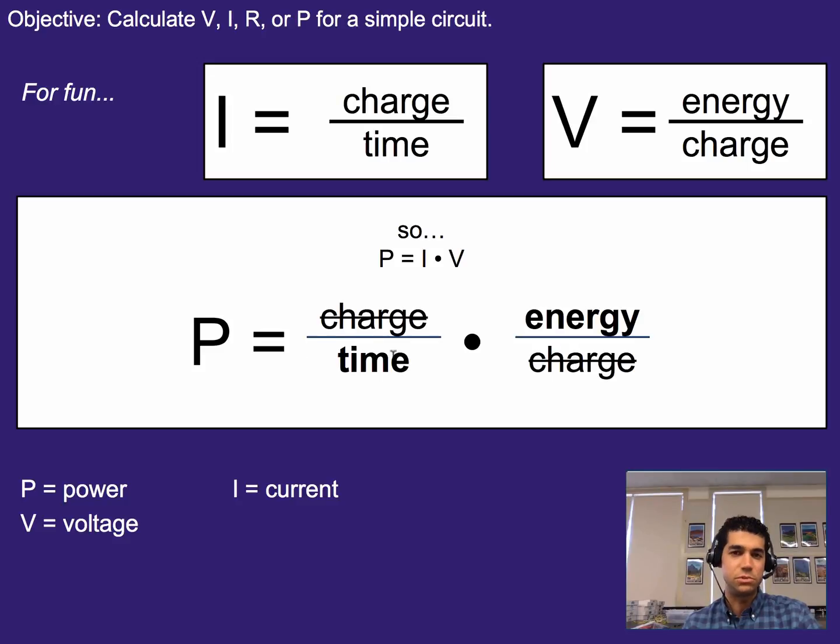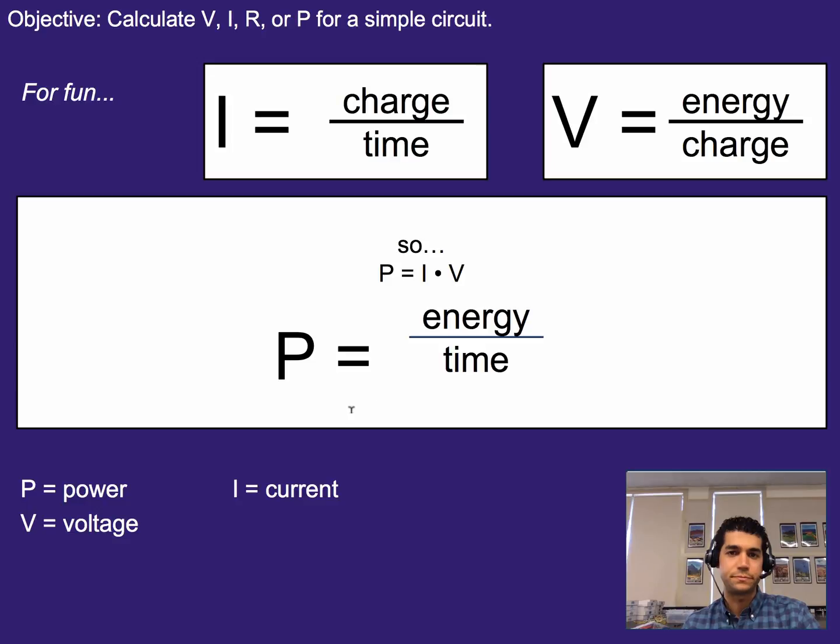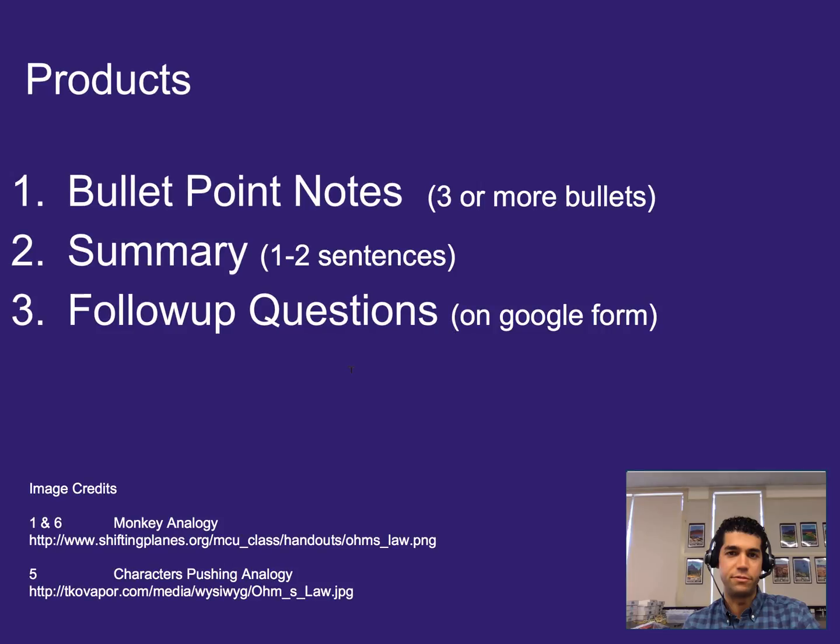If that's confusing, don't worry too much about it, just know that power is current times voltage. So that's the simplified form. That's it for this one, three or more bullet points worth of notes, one to two sentence summary, and please do your follow-up questions on Google Forms.